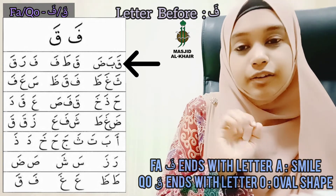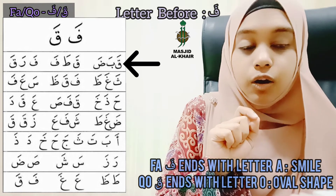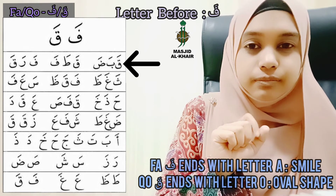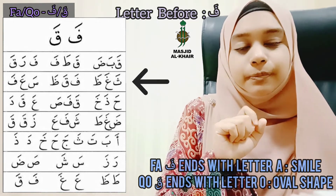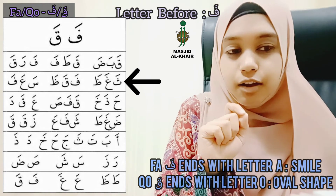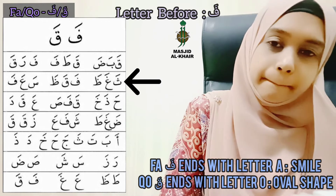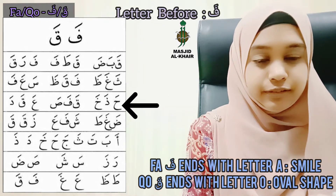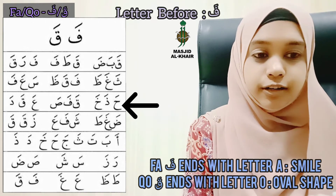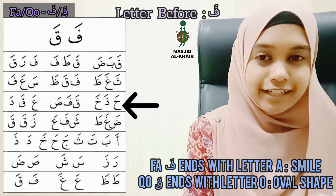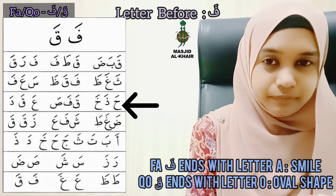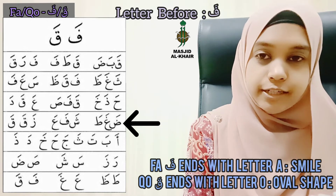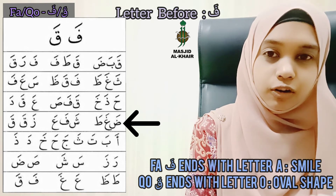Starting from the top. QO-BA-DO. QO-TO-FA, FA-RA-QO. Alhamdulillah, very good. THA-THA-GHAZ-FA-QO-Z-SA-A-FA. Masha Allah, very good. Next: HA-THA-KH-QO-FA-SA-A-QO-DA. Masha Allah, very good. And the last sentence: DUH-GHO-TO-SH-FA-A-Z-QO. QO. Alhamdulillah, very good.